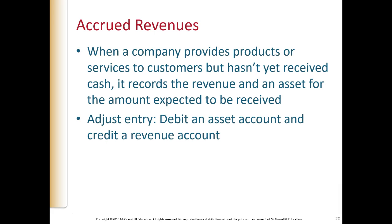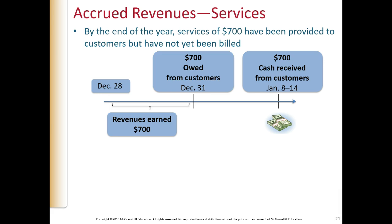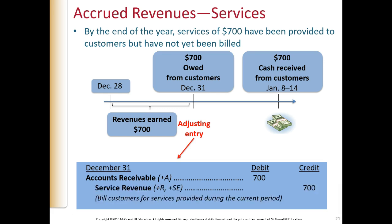Accrued revenues: this is where we've done the work but the customers have not paid us yet. Let's say we've earned $700 worth of revenue from December 28th into year-end — they owe it to us and we will collect it sometime in January. The adjusting entry as of December 31st: debit accounts receivable $700 (to show customers owe us money) and credit service revenue $700. We've done the work and recognize the revenue, even though we have not yet collected the cash.